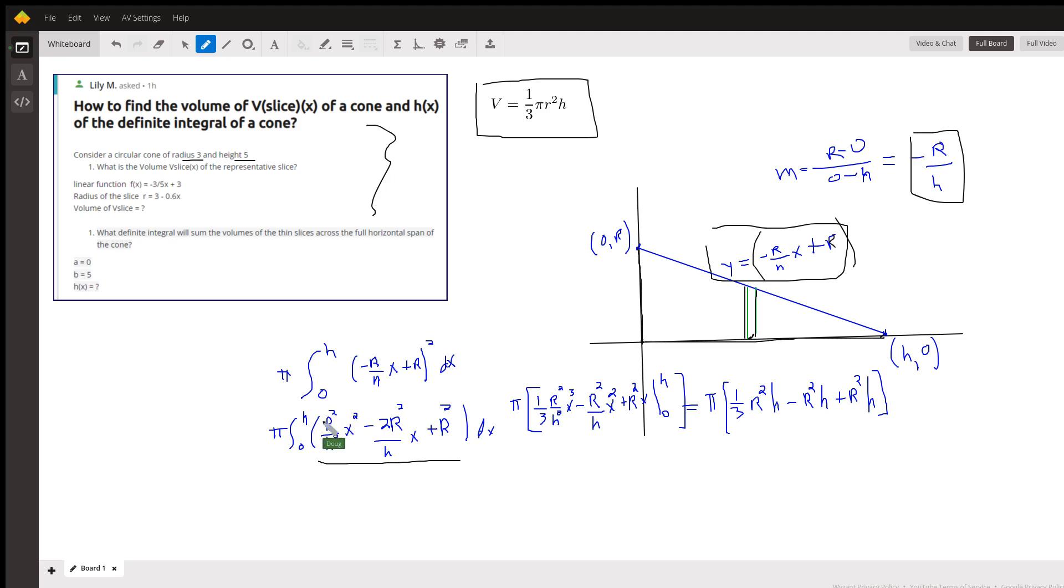So the antiderivative, raise the exponent by 1, we get x cubed, multiply by the reciprocal of the new exponent, and then evaluate from 0 to h.